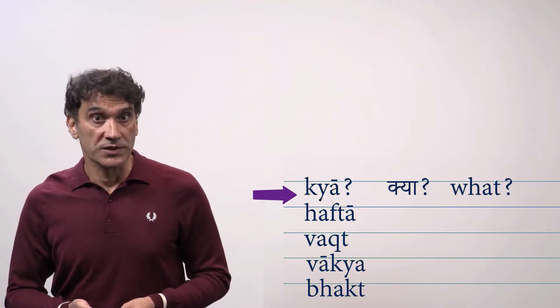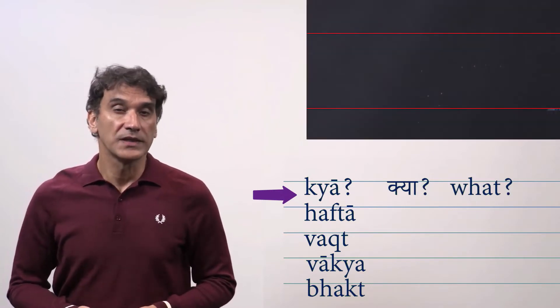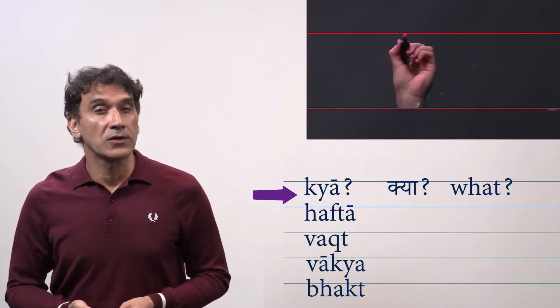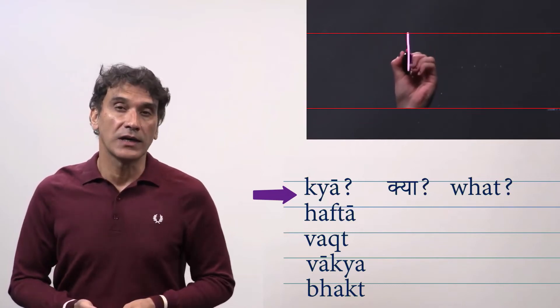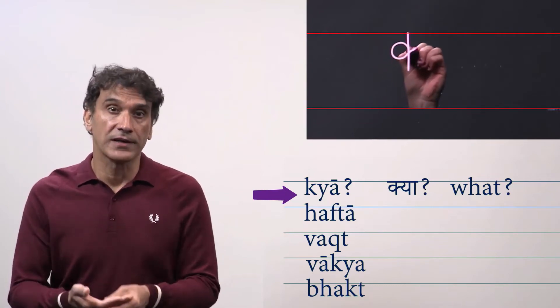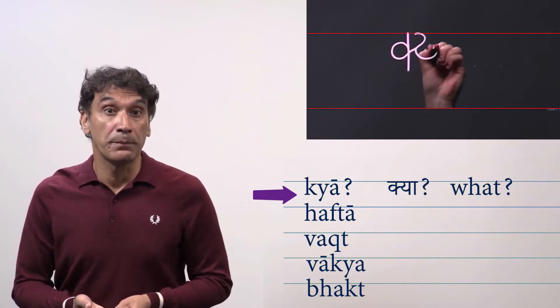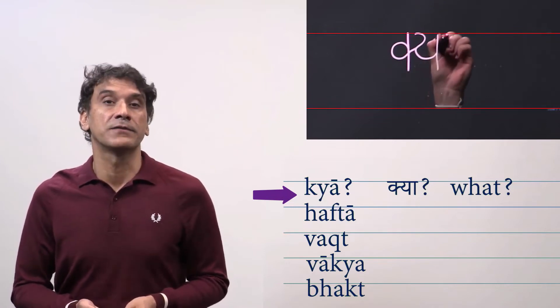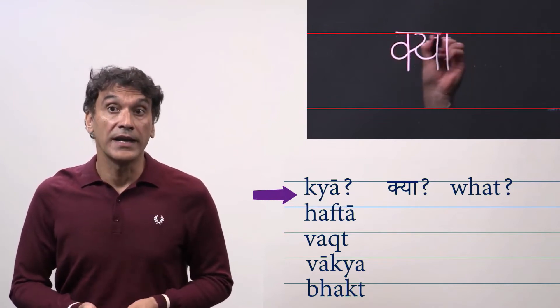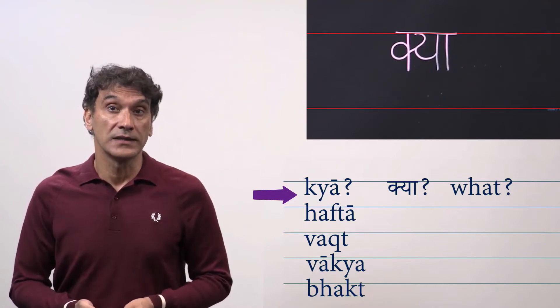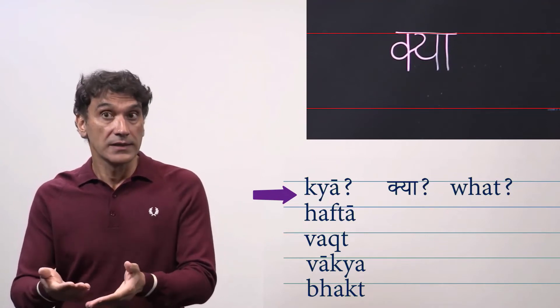Kya is the question word what, the interrogative word what. Since ka is followed by the consonant ya it will be cut into half. You will write half ka. That means you will chop off a big part of the tail and connect it with the next consonant ya. And ya has long a matra. Ya, so kya.